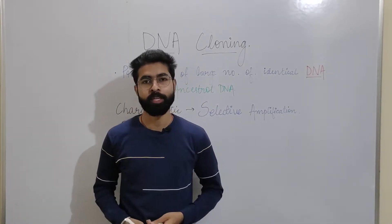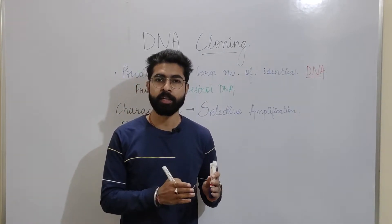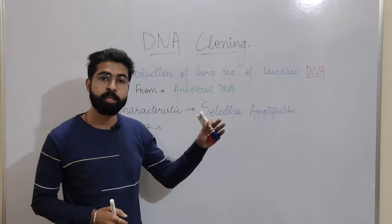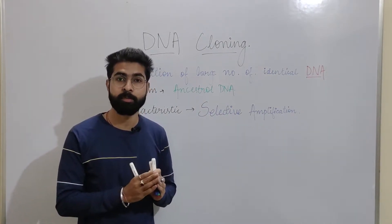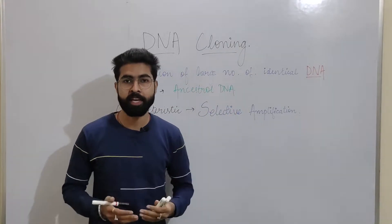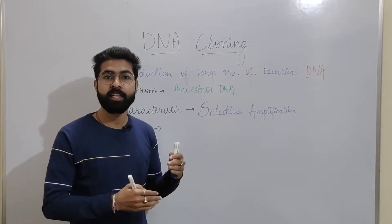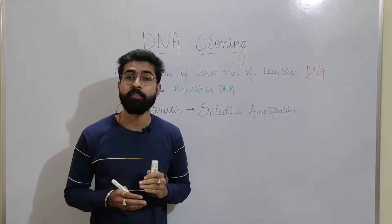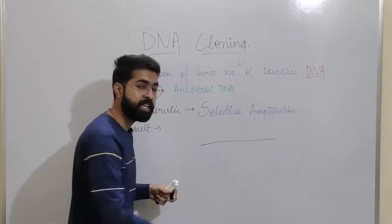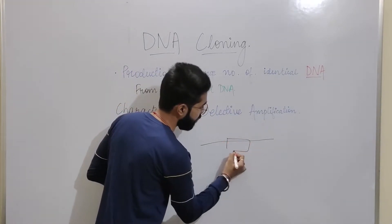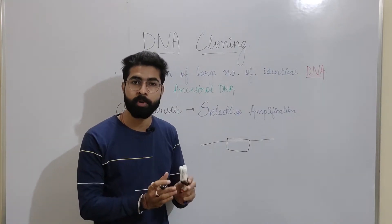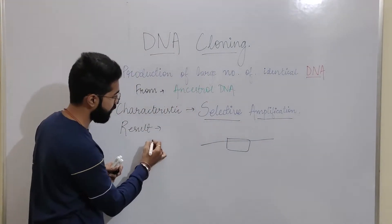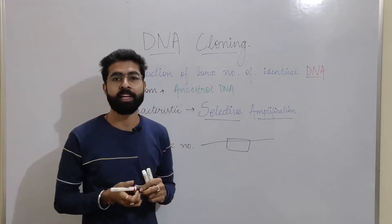Let's know what is DNA cloning. DNA cloning, as the name suggests, is the cloning of DNA — that is, the production of a large number of identical DNA molecules from a single ancestral strand, 100% similar to the ancestral DNA molecule. Ancestral DNA is a DNA that acts as a template upon which replication occurs. The basic characteristic of DNA cloning is that it does selective amplification — we can select a small area of DNA that we want to amplify. The result is a large number of identical DNA molecules.